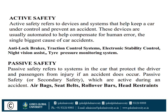Active safety refers to devices and systems that help keep a car under control and prevent accidents. These devices are usually automated to help compensate for human errors, the single biggest cause of car accidents. Some examples include anti-lock brakes, traction control system, electronic stability, night vision assist, and tire pressure monitoring system.